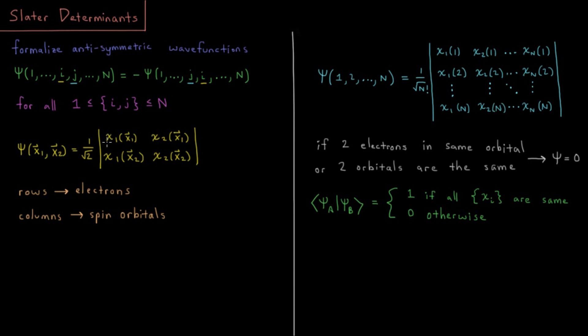The labels chi1, chi2 are going to change based on the column. The labels x1 and x2, the electron coordinates, are going to change by the row. That's summarized in what I said there.